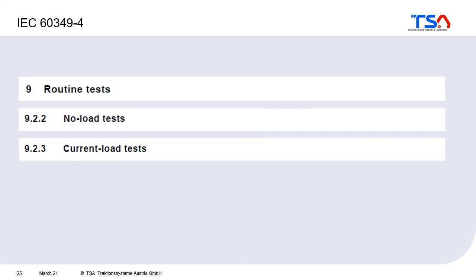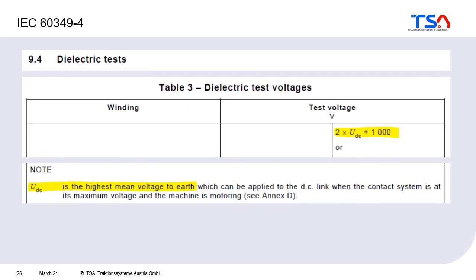During routine tests, a no-load test and a current load test are performed. For a permanent magnet machine, the no-load test measures voltage to check magnet magnetization, while the current load test gives information about machine behavior under load. The dielectric test, performed on every machine, tests insulation at two times the highest DC link voltage plus 1,000 volts. Because this test puts high stress on the insulation, it should only be performed once.